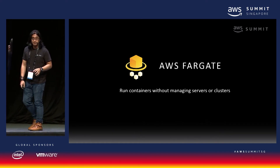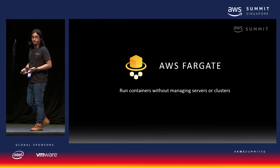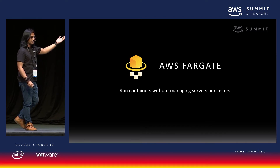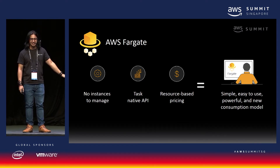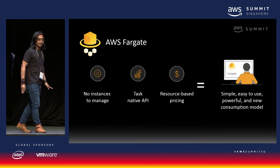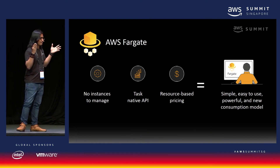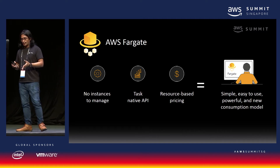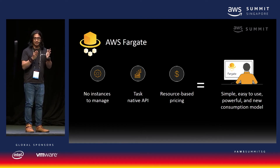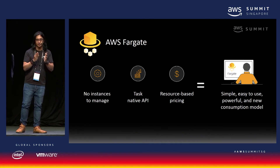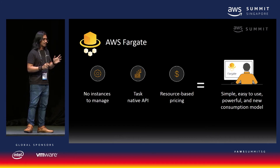Last year during re:Invent, we announced AWS Fargate. Fargate is a service that lets you run containers without managing servers or clusters. The benefits of using AWS Fargate include no instances to manage, and it's built on task-native APIs with resource-based pricing. You simply deploy your container image, and because it's a fully managed service, you don't need to manage clusters or infrastructure — it's all managed by Fargate.